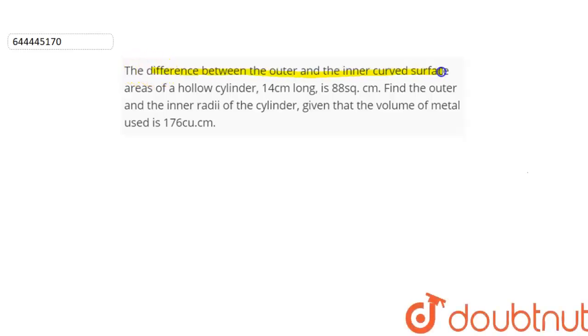Our question is: the difference between the outer and the inner curved surface area of a hollow cylinder which is 14 centimeters long is 88 square centimeters. Find the outer and the inner radii of the cylinder given that the volume of the metal used is 176 cubic centimeters.